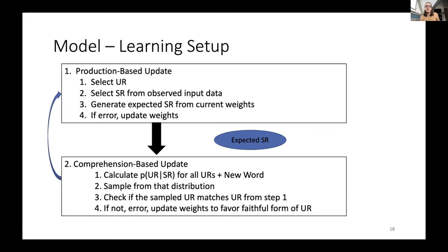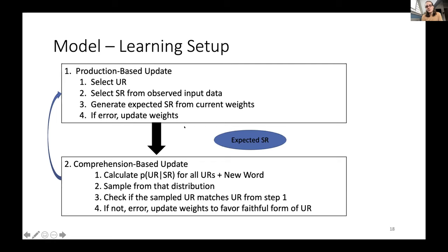The entire learning setup works as follows: after giving the SR to the comprehension-based update, we calculate the probability of UR given SR for all URs and new word, sample from that distribution, check if the sampled UR matches the UR from step one, and if not, update the weights to favor the faithful form of the UR. Then we go back to step one, choose a new UR, and repeat.